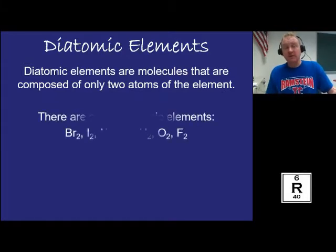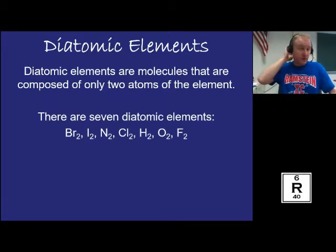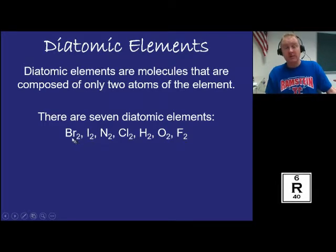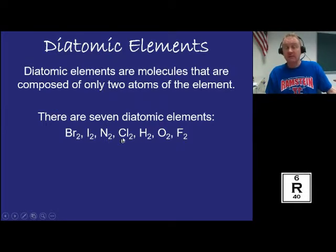You need to know these elements. Whenever you write the elemental structure of these diatomics, you have to put a subscript 2 after it. Bromine is always diatomic when you find elemental bromine — so it's always Br2. Iodine is diatomic: I2. Nitrogen is diatomic: N2. Chlorine, hydrogen, oxygen, and fluorine — these are all diatomic elements.